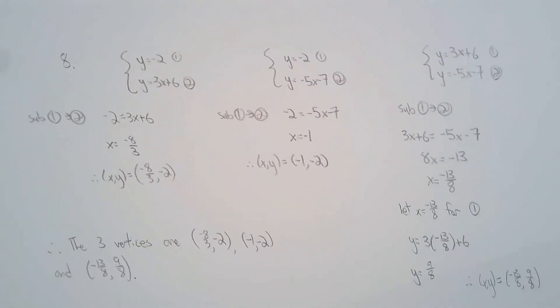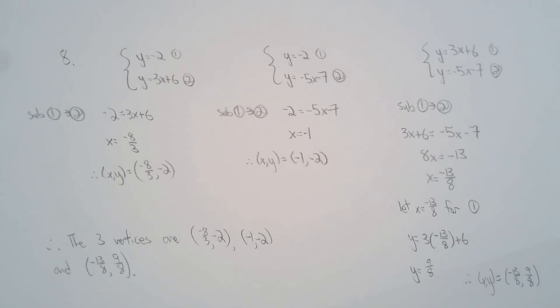Question 8 was pretty nice. You have three lines. And if you join them, you're going to have three points of intersection. Or if you graph the three lines, you'll see that there are three points of intersection, which make up a triangle if you join the three points of intersection.